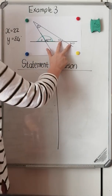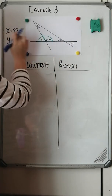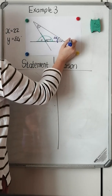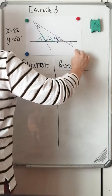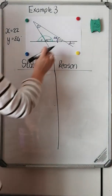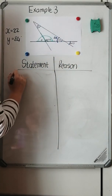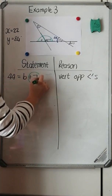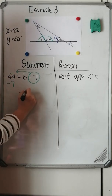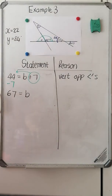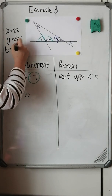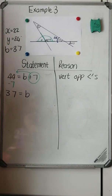Lastly, I want to solve for b. I can get the value of 2x: since x is 22, this angle is 44 degrees. I know that this angle and that angle are vertically opposite because they're two straight lines passing through one another. Vertically opposite angles are equal, so 44 must equal b plus 7. Solving for b: take 7 over and subtract from 44. B is equal to 37 degrees. So I've solved for all variables: x was 22, y was 84, and b was 37 degrees.